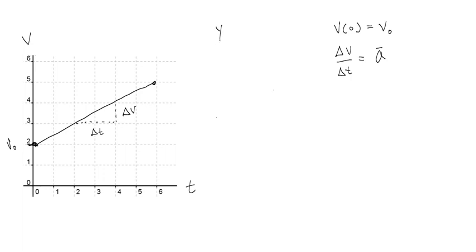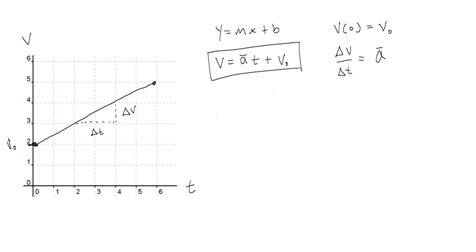The equation we get from this uses the form of a line, y equals mx plus b, but with a v-axis and a t-axis. So: velocity equals average acceleration times time plus v-naught (initial velocity). This can only be used if there is uniformly accelerated motion, or constant acceleration — we call that UAM.